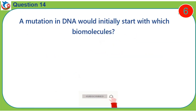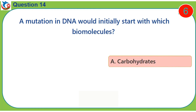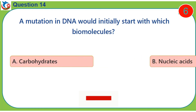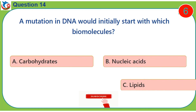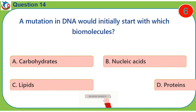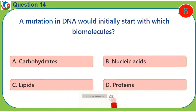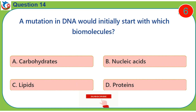Question 14. A mutation in DNA would initially start with which biomolecules? A. Carbohydrates. B. Nucleic acids. C. Lipids. D. Proteins.